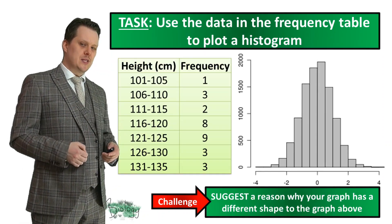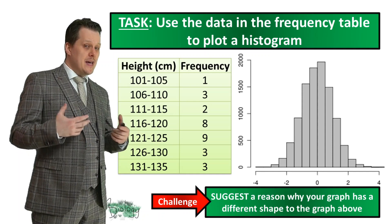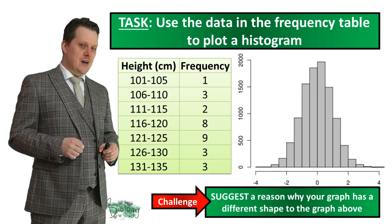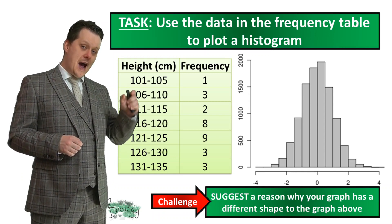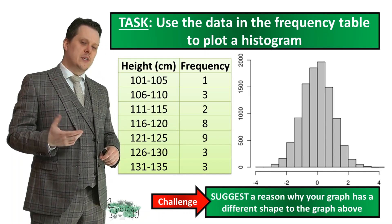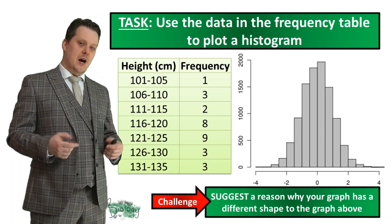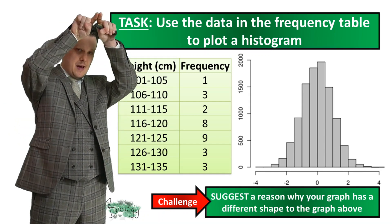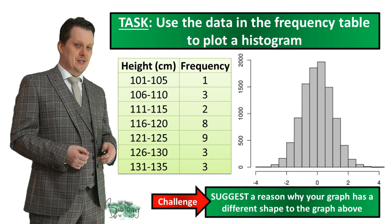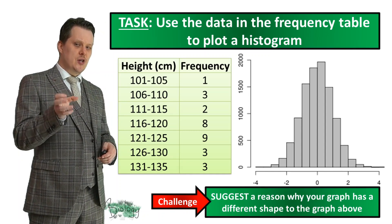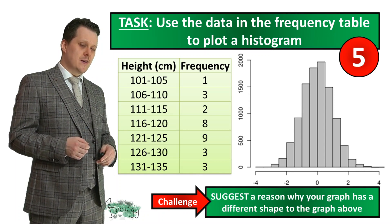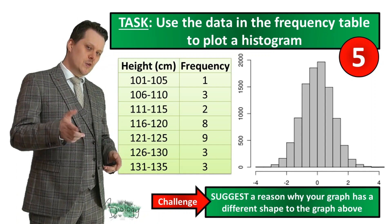Now that we've got our completed frequency table, we're going to plot a histogram. A histogram is a special kind of bar chart which we use to plot continuous data. In your histogram each of your bars should be touching, and if you've got enough people in your data set, your histogram should have a very similar shape to the one on screen — we call this a distribution curve, sometimes referred to as a bell curve because of its bell-like shape. Use the data in the frequency table to plot your histogram. Pause the video if you need more time.